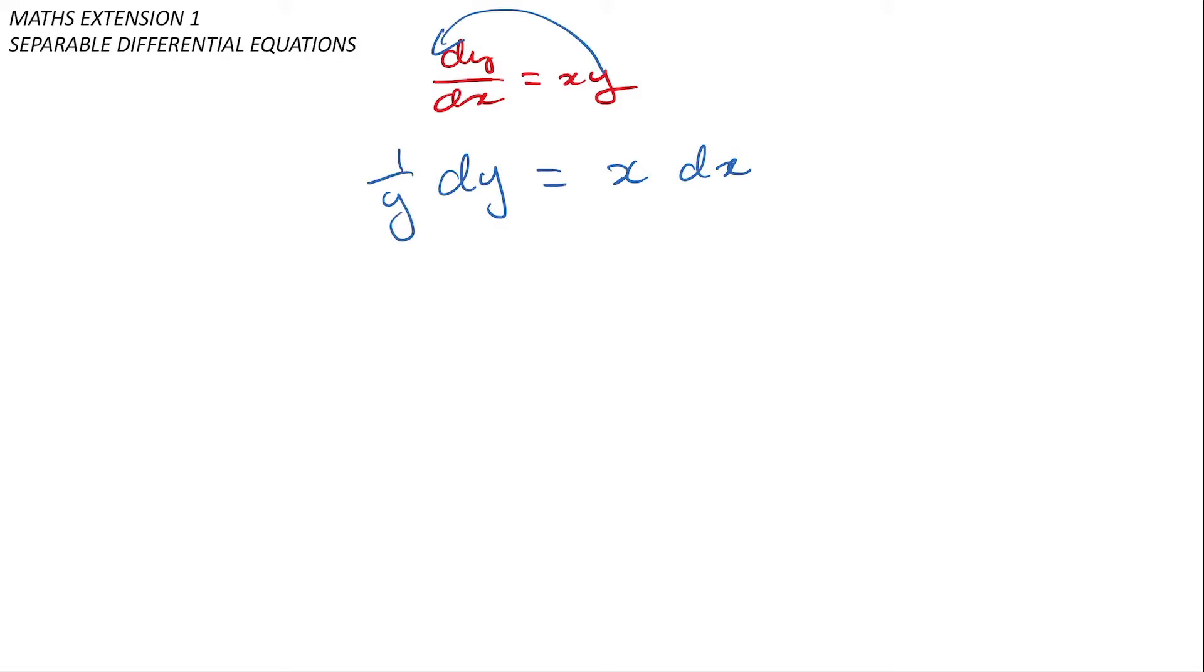The next thing I do is literally just put an integral in front of both of them and integrate as usual. So that'll be log|y| and that will be x²/2 + c.